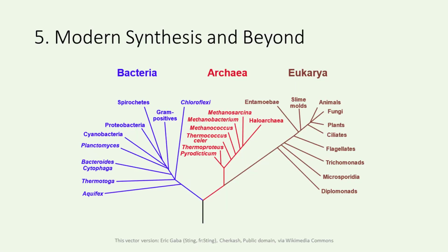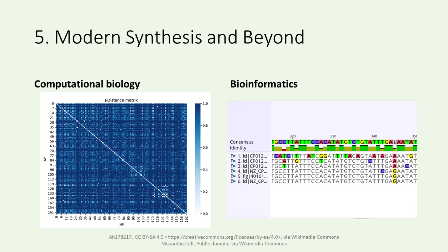From these advancements, phylogenetics emerged as a powerful discipline. It employs molecular data to construct evolutionary trees, offering unprecedented insights into the evolutionary history and relationships among species. These trees serve as roadmaps guiding our understanding of life's intricate tapestry. The image illustrates a phylogenetic tree showing the three domains of life: bacteria, archaea, and eukarya. Furthermore, the integration of computational methods and bioinformatics has accelerated our pace of discovery. Advanced algorithms now aid in analyzing vast datasets, predicting evolutionary trajectories, and even designing conservation strategies. The image on the left displays a heat map representing Jaccard distances for nuclear profiles in computational biology, while the image on the right illustrates sequences being evaluated in a MUSCLE multiple-sequence alignment in the field of bioinformatics.